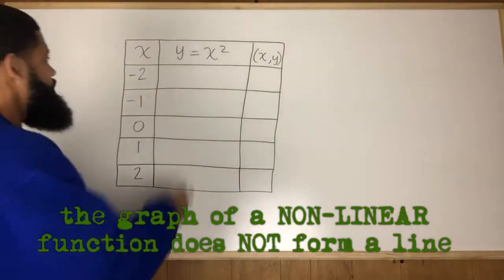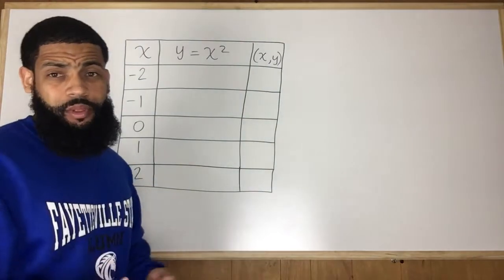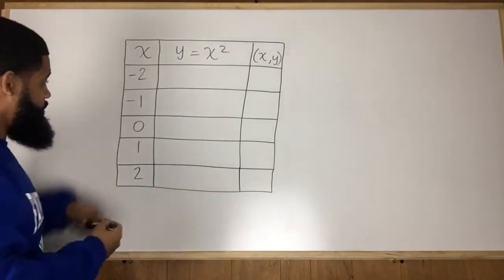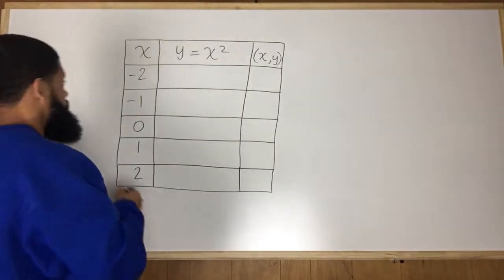So we have the function rule y equals x to the second power, or just simply y equals x squared. So once again, I have my two negative values, I have 0, and I have my two positive values.